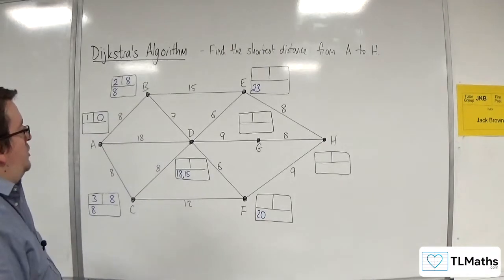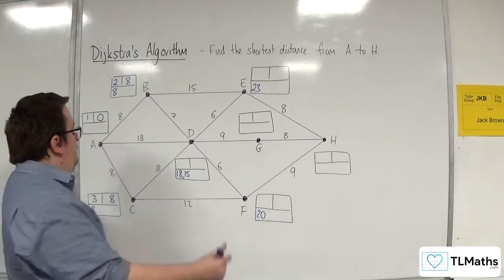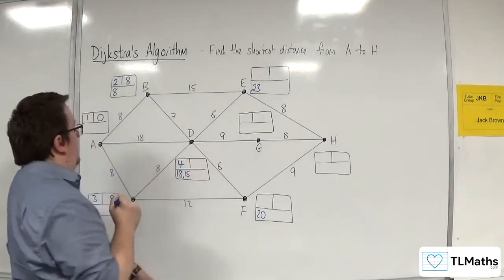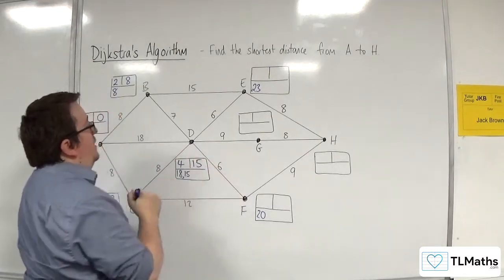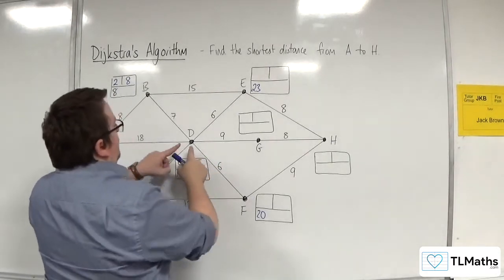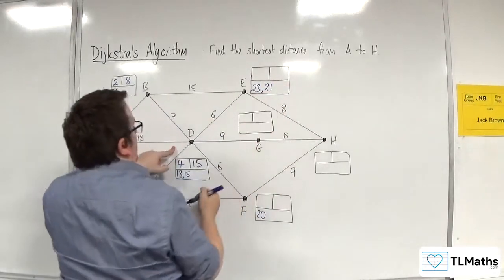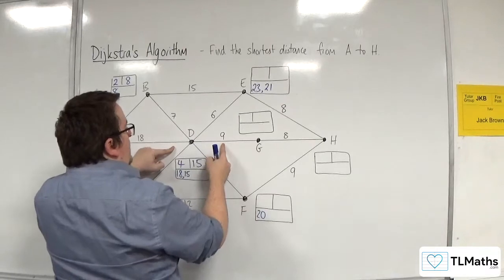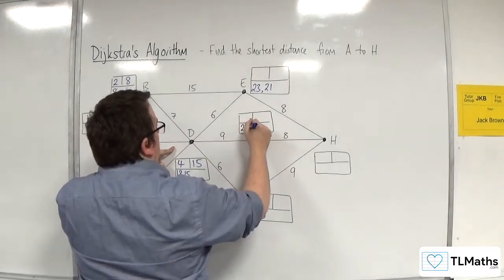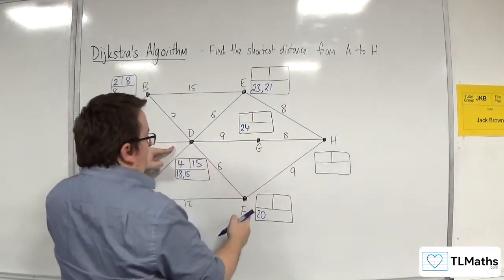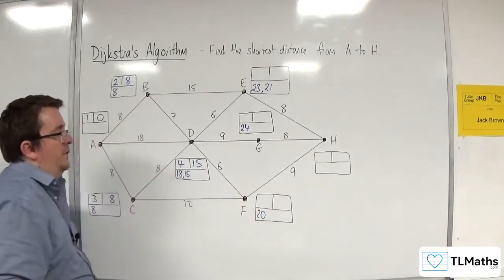Okay, so the next shortest is D, so that is the fourth one to be considered, and 15 gets put in the final value box. 15 plus 6 is 21, and 15 plus 6 is 21, which isn't better than 20.